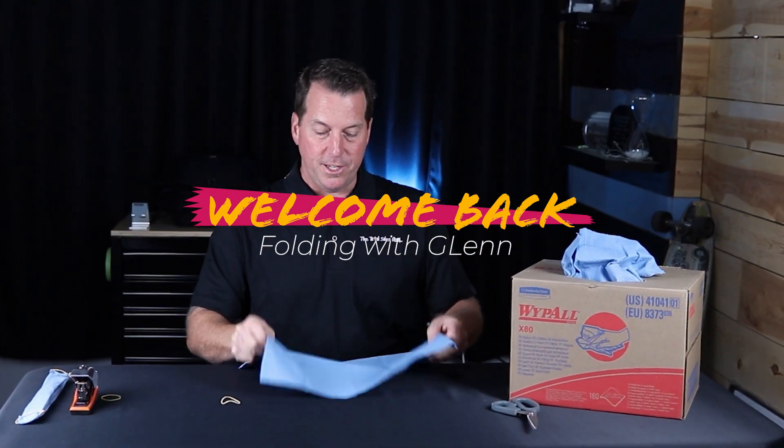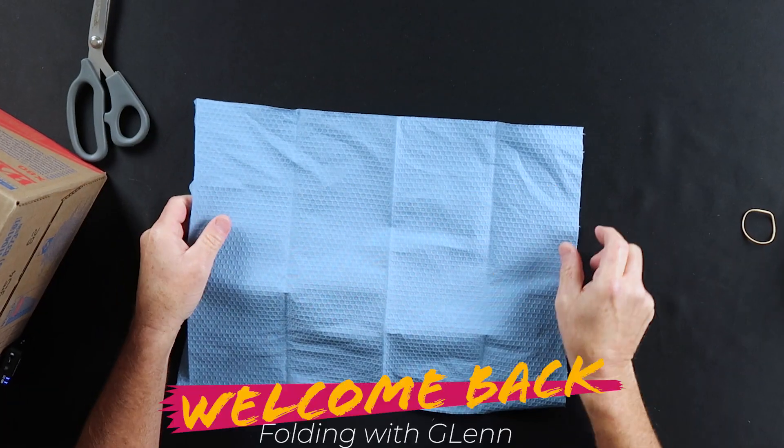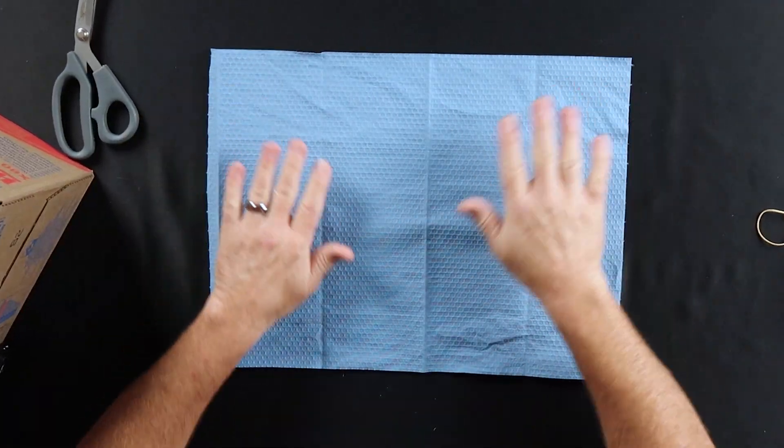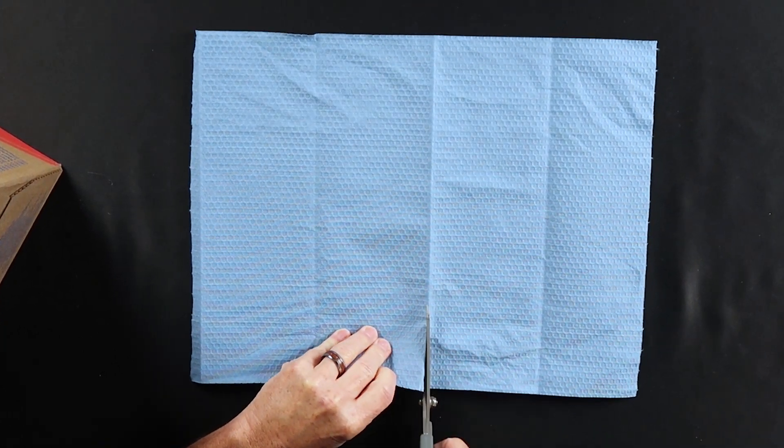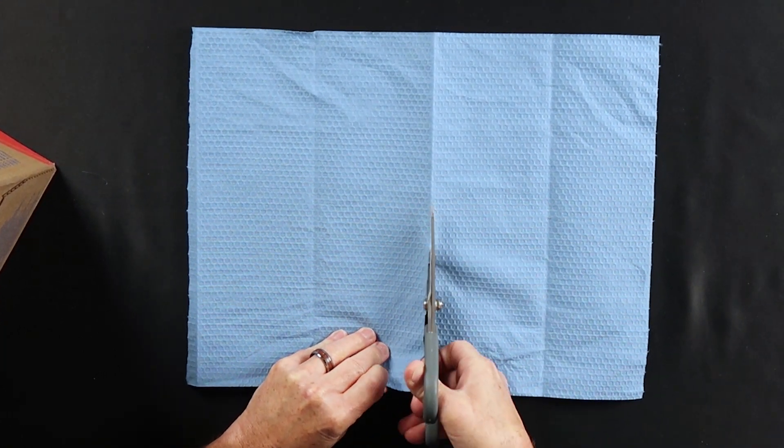Pretty simple, so stay tuned. Alright, you're going to take your X80, lay it out, press it out, and you're going to take your scissors and cut it right down the middle.